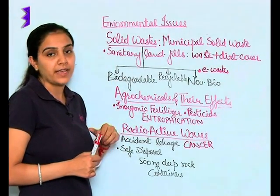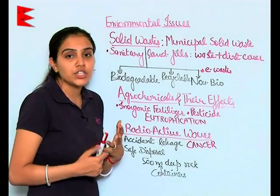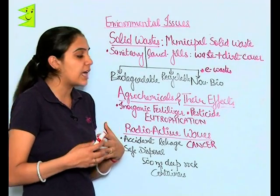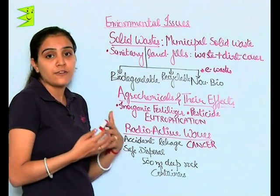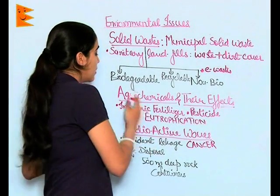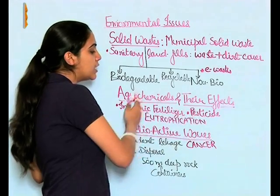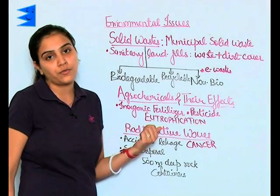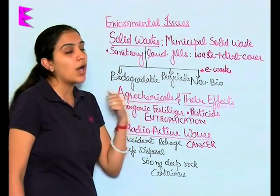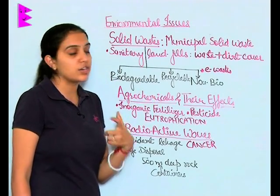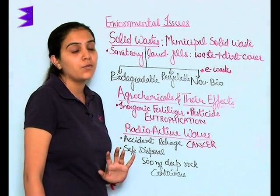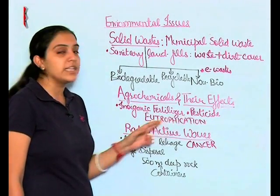Agrochemicals and their effects. During the Green Revolution, the usage of inorganic fertilizers, pesticides, herbicides, germicides, etc. was raised to a very high level. The usage of these chemical components leads to eutrophication — that is, passage of these components to non-target organisms — because agricultural waste usually consists of agrochemicals which are discharged into water bodies, leading to eutrophication.